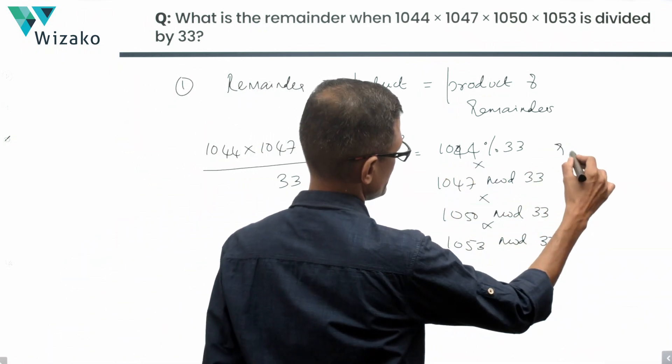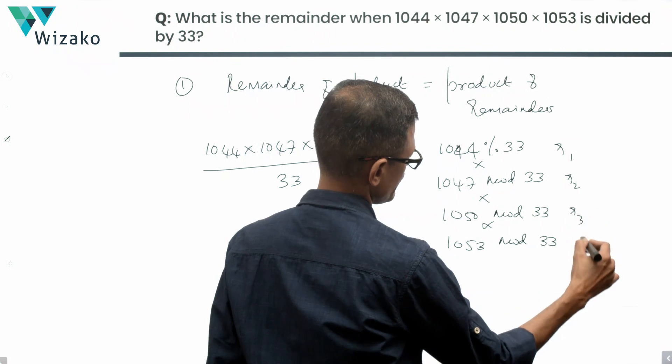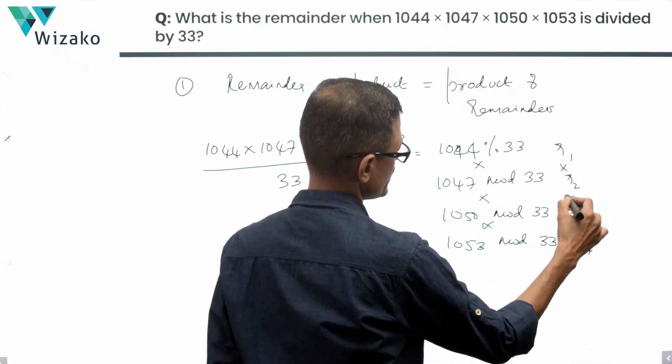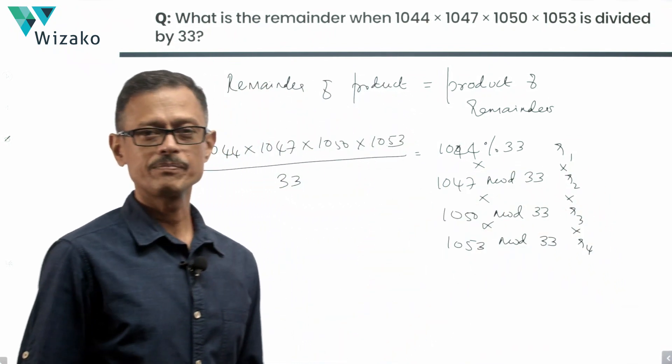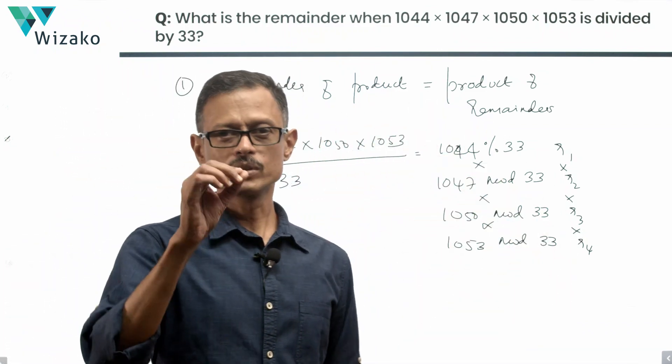If you call this remainder 1, remainder 2, remainder 3, remainder 4, we're going to multiply all of these remainders and arrive at the answer. This is step 1.